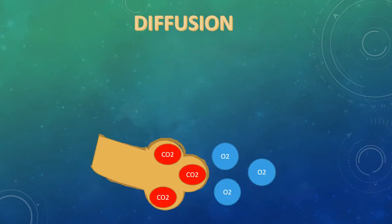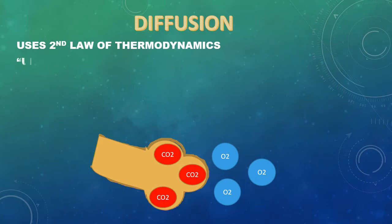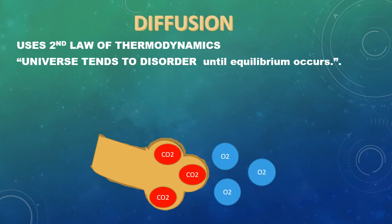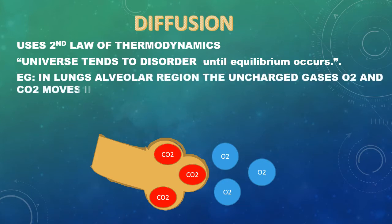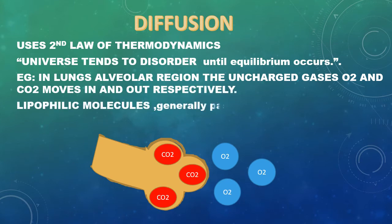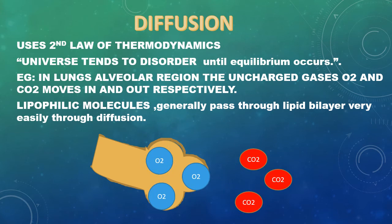Simple diffusion uses the second law of thermodynamics — the universe tends to be in disorder until equilibrium occurs. For example, in the lungs at the alveolar region, uncharged gases such as oxygen and carbon dioxide move in and out respectively. Lipophilic molecules also pass through the bilayer very easily. From the pictorial depiction, oxygen comes inside and carbon dioxide moves outside — this is simple diffusion.